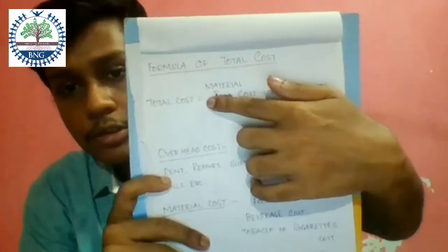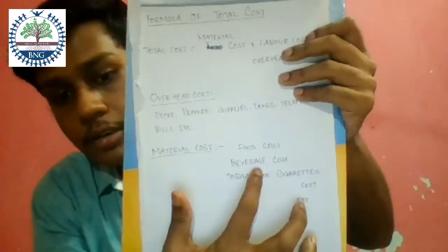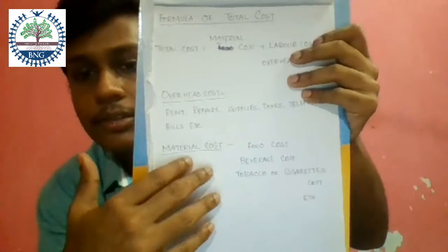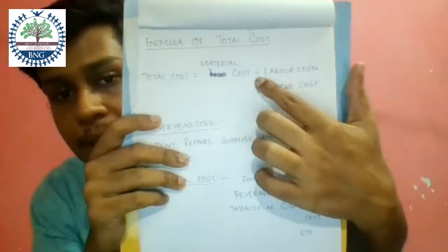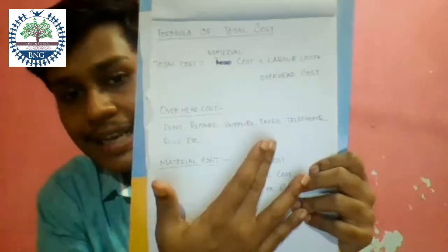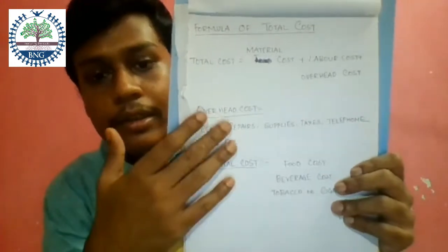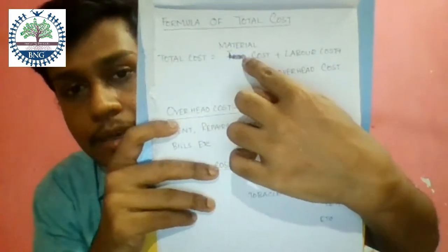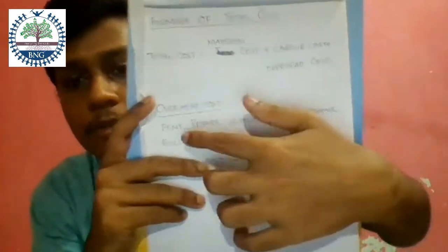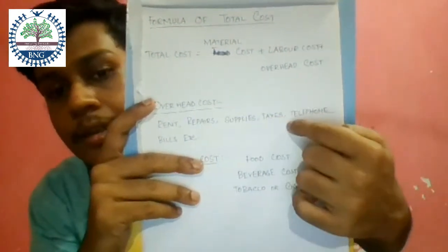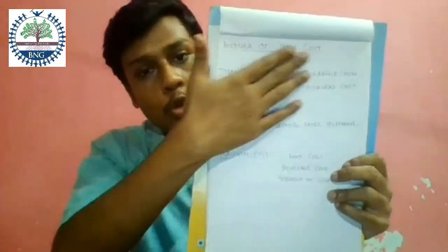Now, what is total cost? Total cost equals material cost plus labor cost plus overhead cost. Material cost includes food cost, beverage cost, and tobacco or cigarette cost. Overhead cost includes rent, repairs, supplies, taxes, telephone bills, and other miscellaneous costs.